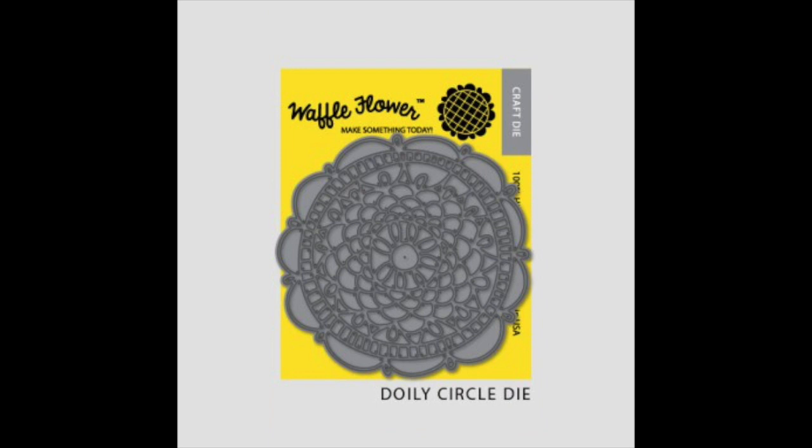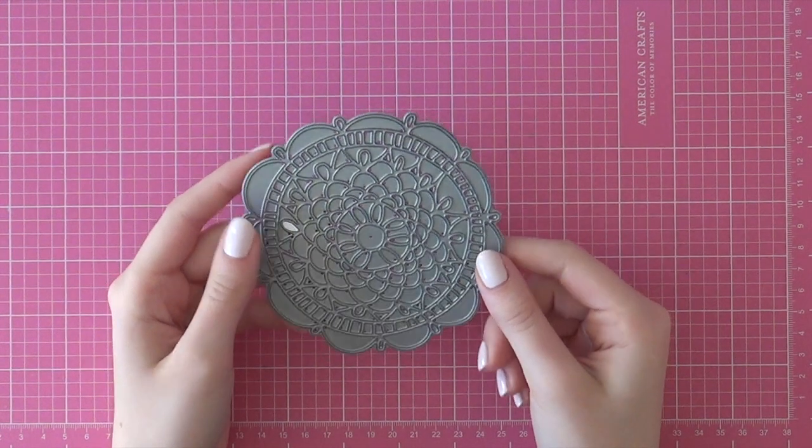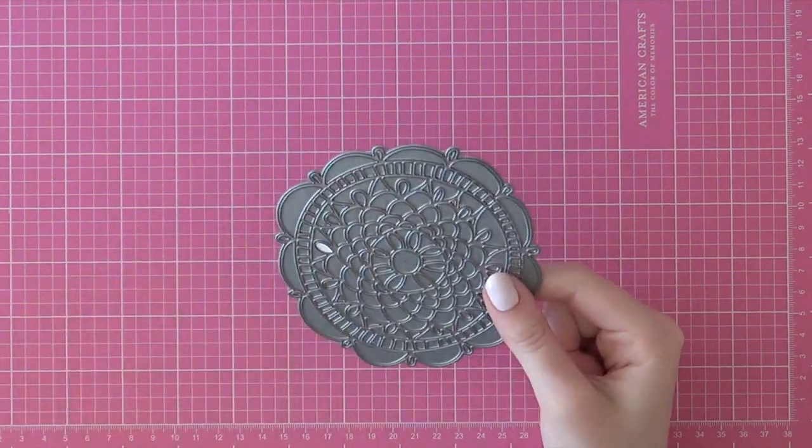We are using the homemade Christmas stamp set along with the doily circle die. You can win the doily circle die by leaving comments on our videos. You can find links to these videos in the video description below. So let's get started with my card.